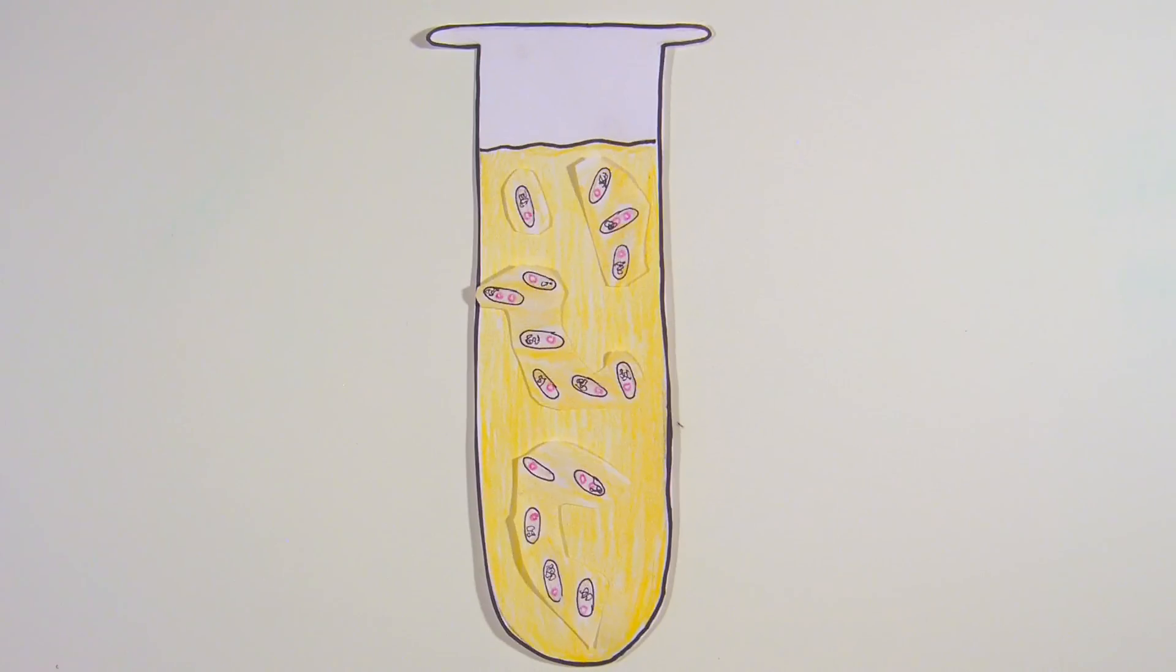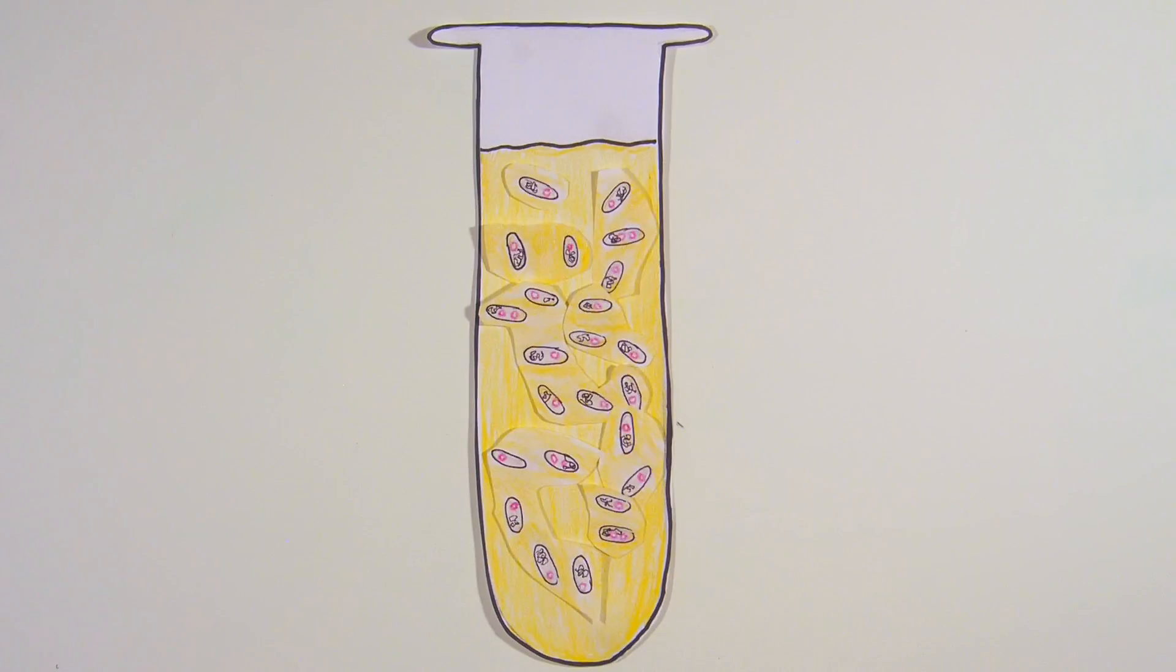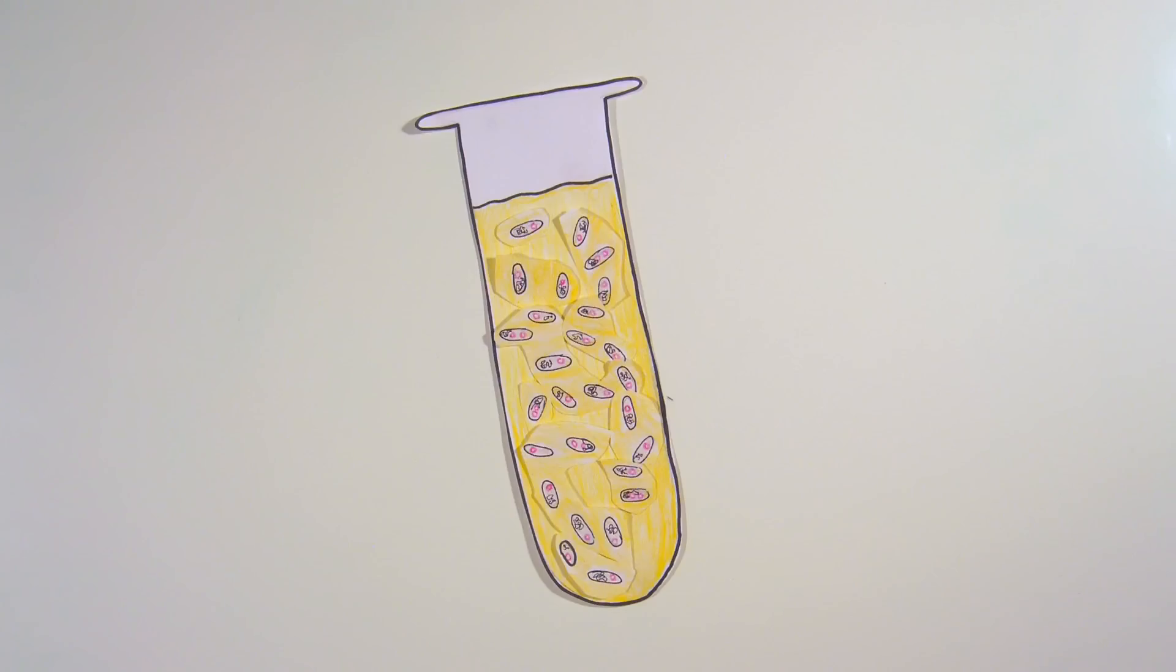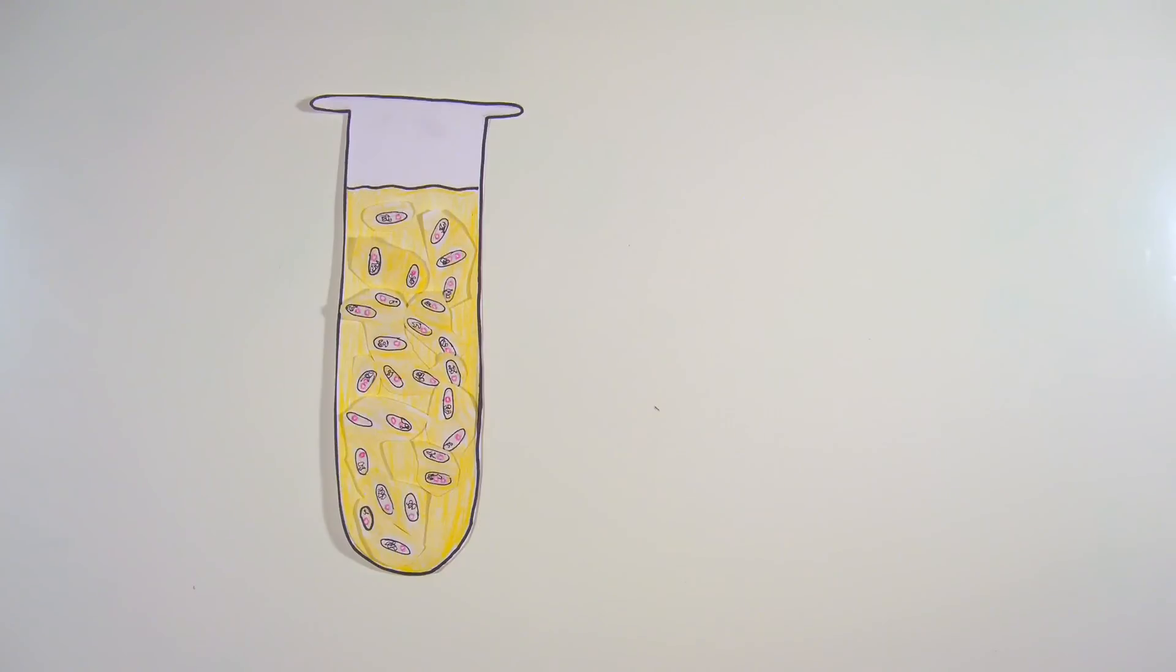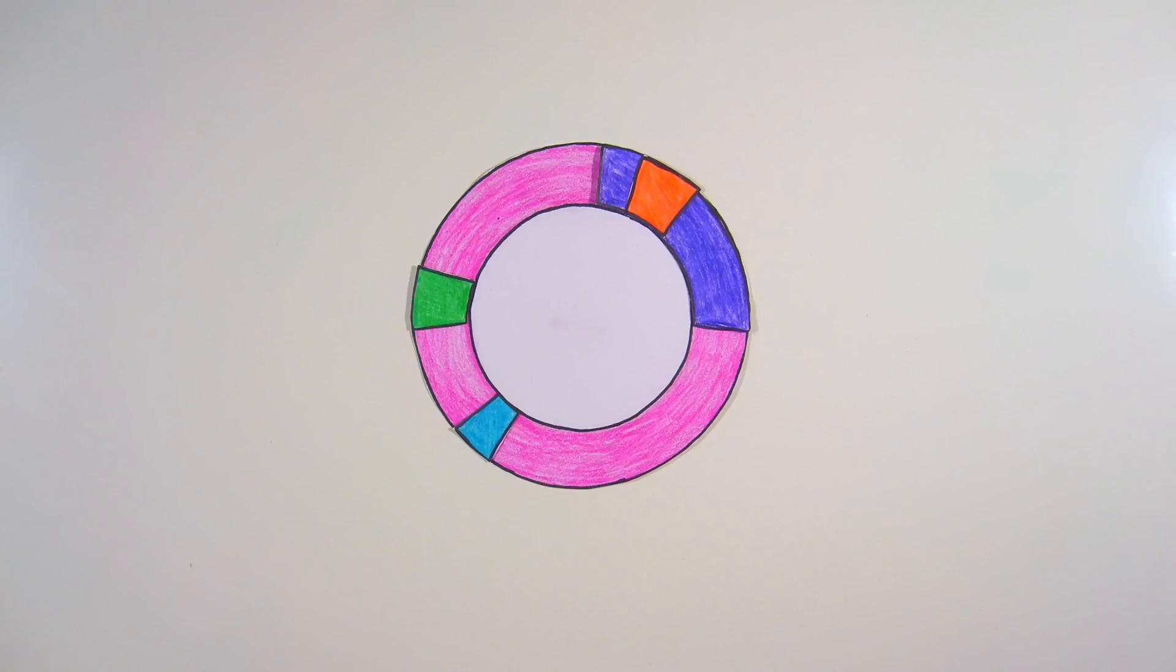Since bacteria replicate plasmid DNA before each cell division, and since some plasmids are present in several copies per cell, a simple overnight culture of bacteria can yield vast numbers of plasmid DNA molecules. For this reason, bacterial cells can serve as factories for making large amounts of plasmid DNA and the DNA sequence of interest.